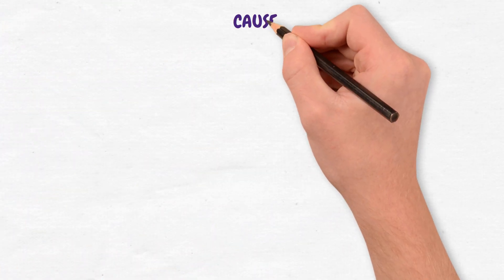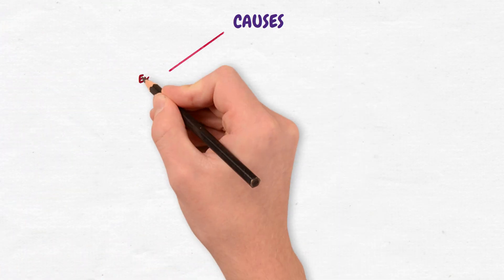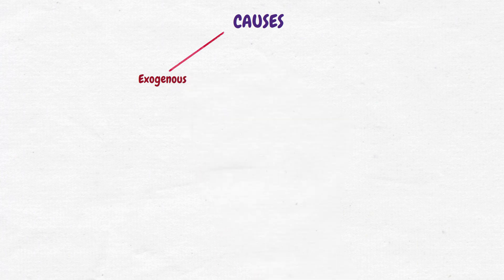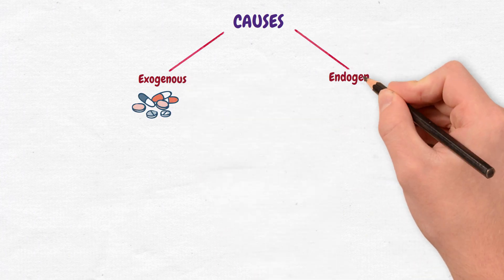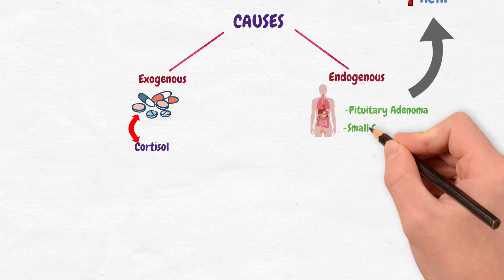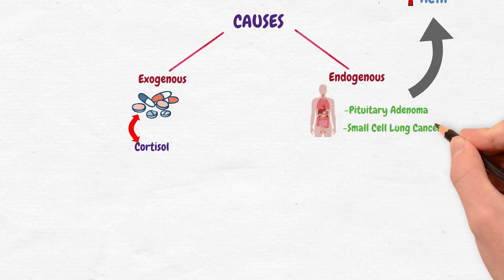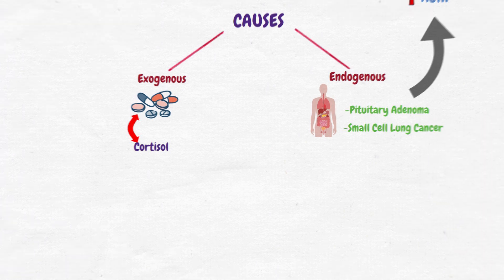The causes of Cushing's syndrome can be divided into exogenous causes, due to steroid medications, or endogenous causes, where cortisol is made in excess by the body itself. Other endogenous causes include small cell lung cancer, which provides an ectopic source of ACTH production.